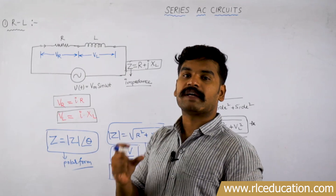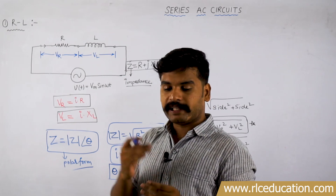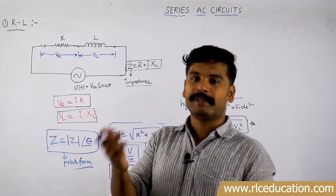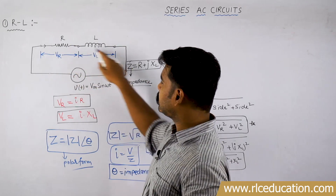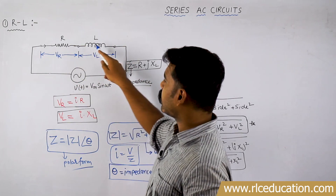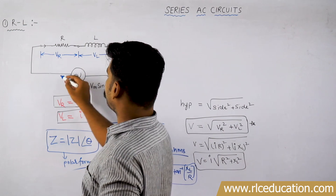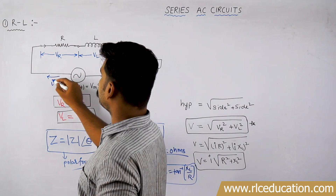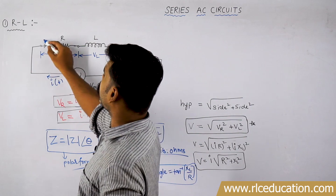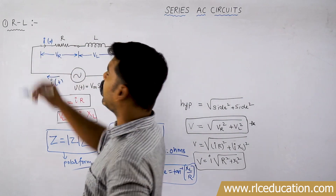What is the behavior of any series circuit? All the elements will have the same amount of current — the current will be the same. So if you look at this series circuit, you have a resistor and inductor connected in series. There is some current released by this source — let us say that current is I(t). The same I(t) will be flowing through both R and L.